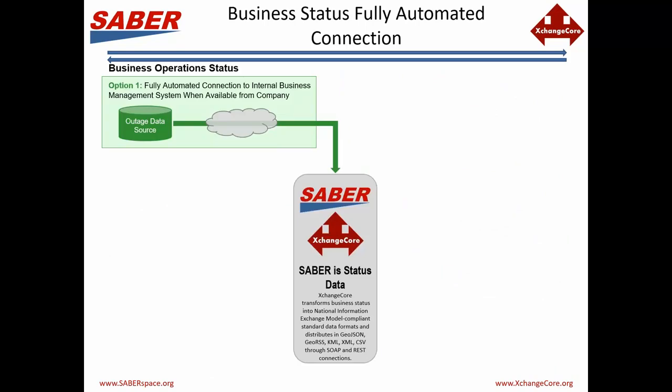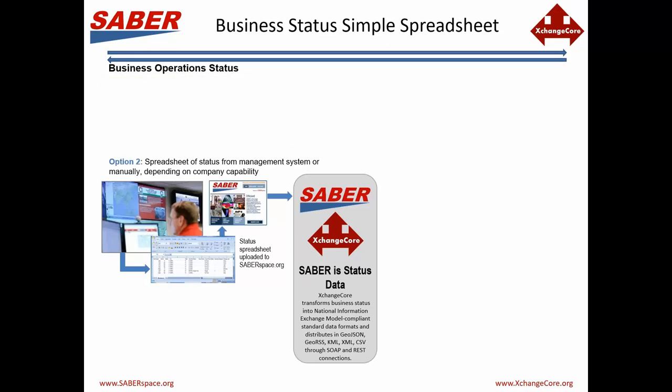So how does it work? There are three different ways that information gets into SABR. The first way is a fully automated connection — nobody has to think of anything and the information drives directly from business outage systems or sources, which could be anything from a security system to a full reporting system, to SABR. The second way, and this is the most popular way, is a spreadsheet of status from the company operations center. We work with a company to establish a way to translate that information into things useful to government, and then somebody just goes in, clicks on the SABR website, and uploads their current status as often as one wishes to.